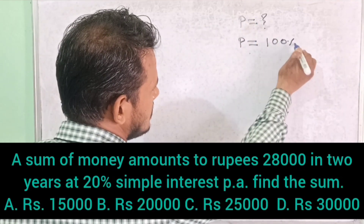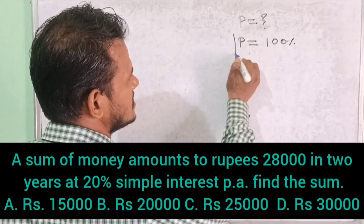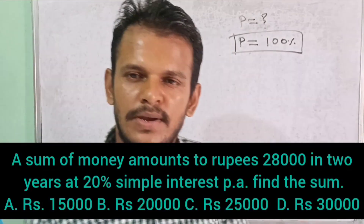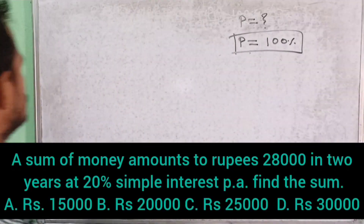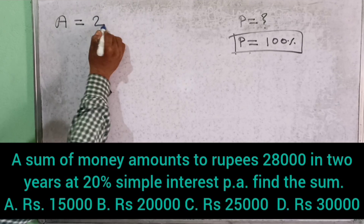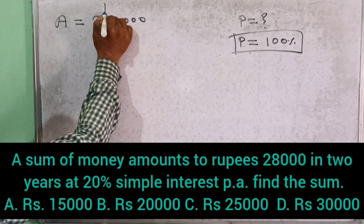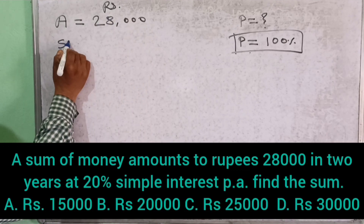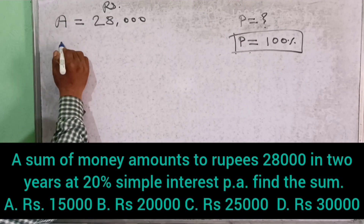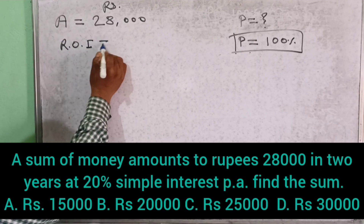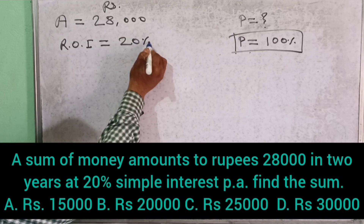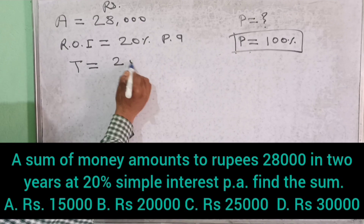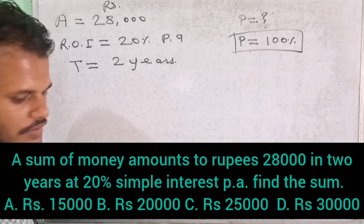Always the principal is 100% — keep that in mind, don't forget it. In this question, the amount given is Rs. 28,000. The rate of interest is 20% per annum and the time is 2 years.